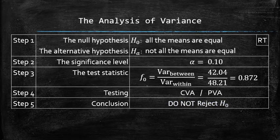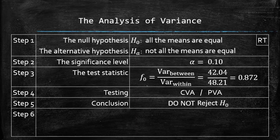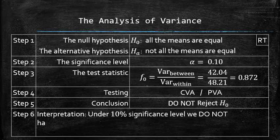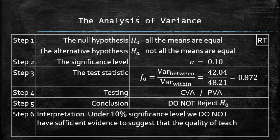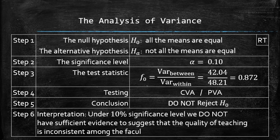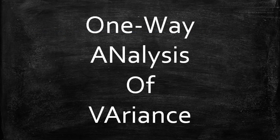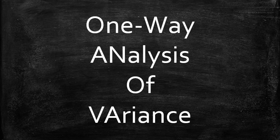Next, we are going to interpret the results. Under the 10% significance level, we do not have sufficient evidence to suggest that the quality of teaching is inconsistent among the faculty in the department. The hypothesis test is complete. I just showed how to apply the ANOVA procedure to test a statistical claim whether the population means are the same or not. This procedure is similar in spirit to the 2-means t-pooled procedure, except that it can be done for three and more populations.